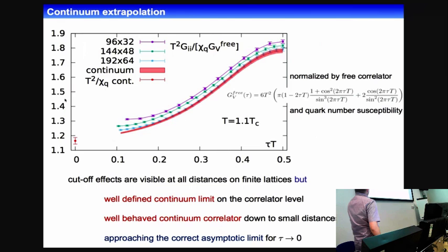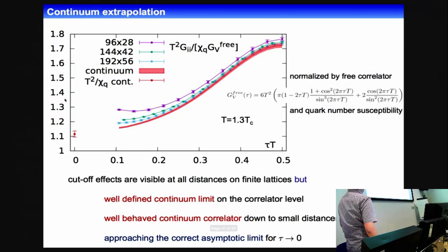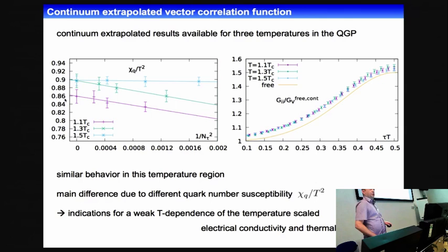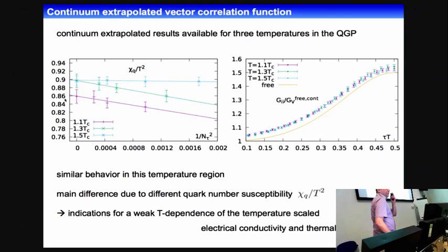We did this for all three temperatures — 1.1 Tc, 1.3 Tc, and 1.5 Tc — and here you see a comparison of the continuum extrapolated correlators normalized by the free correlation function. We see a very similar behavior in this temperature regime, which already indicates a weak temperature dependence in the electrical conductivity and in the dilepton rates, at least if you scale correctly with the temperature.